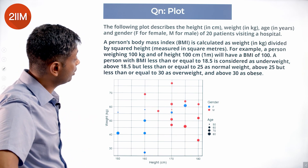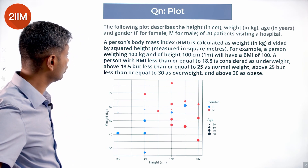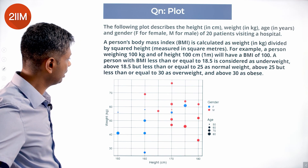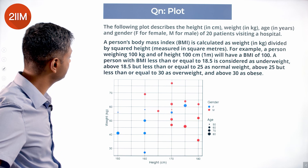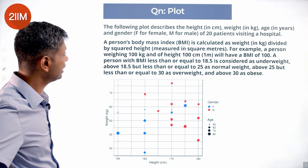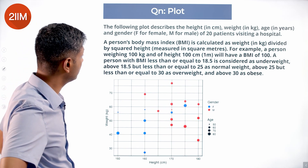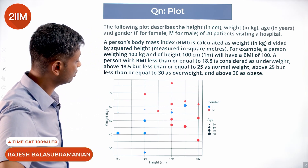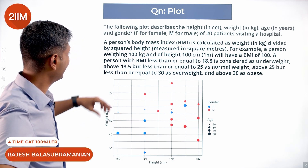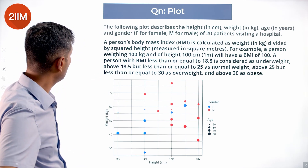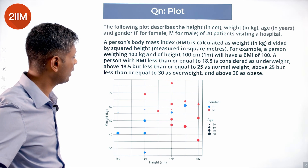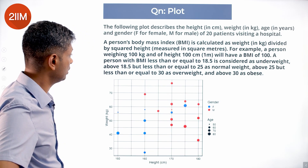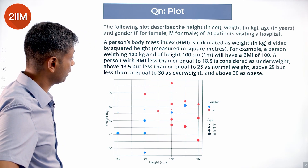The following plot describes the height in centimeters, weight in kilograms, age in years, and gender (female or male) of 20 patients visiting a hospital — female is blue, male is red. A person's body mass index is calculated as weight in kilograms divided by squared height measured in square meters. For example, a person weighing 100 kilograms and height of 100 centimeters will have a BMI of 100 by 1 squared. A person with BMI less than or equal to 18.5 is considered underweight, 18.5 to 25 is normal, 25 to 30 is overweight.